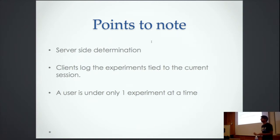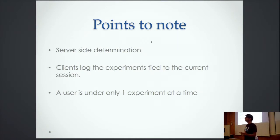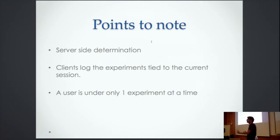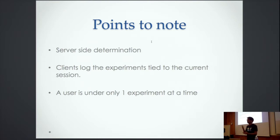Another decision we made is that a user is going to be under only one experiment at a time, because we don't want to do multivariate testing. If you're changing too many things simultaneously for a particular user, it's more difficult to figure out what actually caused the change — whether it was the homepage change, a banner change, or an ads experiment. So we only show a user one experiment at a time.